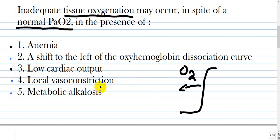Local vasoconstriction means that less blood is going to the peripheral tissue and uptake is decreased also. And metabolic alkalosis results also from a shift to the left of the oxyhemoglobin dissociation curve.